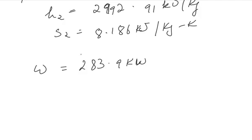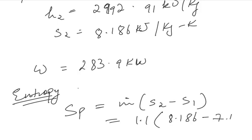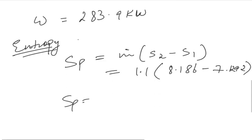Now for finding entropy, Sp will be equal to m times s2 minus s1. That will be equal to 1.1 times 8.186 minus 7.1292. So this one will come out to be 1.174, and entropy production is 1.174 kJ per kg.